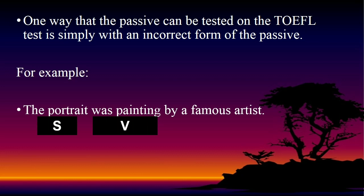The next sentence: 'The project will finish by team.' Let's identify. The subject is 'the project' and the verb is 'will finish.' Is it correct or incorrect? Focus on the subject — the project is definitely finished by someone, it cannot finish by itself. So this sentence should be passive, with structure: subject + to be + verb 3. What is missing? The 'to be' is missing. The correct sentence is: 'The project will be finished by team.'